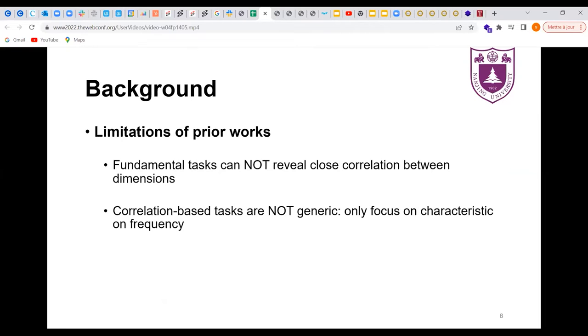According to our previous introduction, we can find that fundamental tasks cannot reveal close correlation of items between dimensions. Although correlation-based tasks make up for the deficiency, they are not generic because they only focus on frequency. So we propose to find special quadratic elements in data streams.